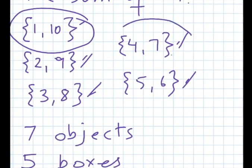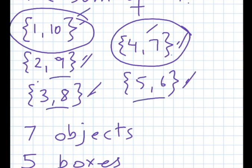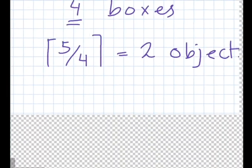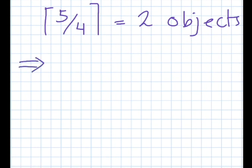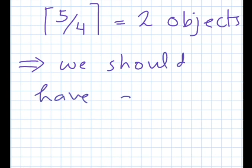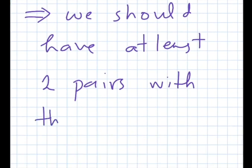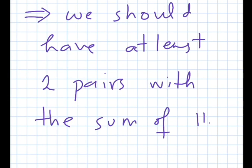This means choosing just one pair is not enough. We must choose at least one more pair. So we can have two numbers from this pair, two numbers from another pair, and one from each of the remaining three — giving us two pairs that yield the sum of 11. Therefore, we can conclude that we must have at least two pairs with the sum of 11.